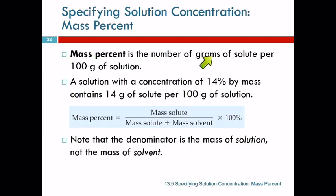Mass percent is the grams of solute per 100 grams of solution. Standard meaning of percent - the part over the whole. So it's the mass of the solute divided by the mass of the whole thing. The mass of the whole thing is the solute plus the solvent, and then you multiply by 100 to get a percentage.